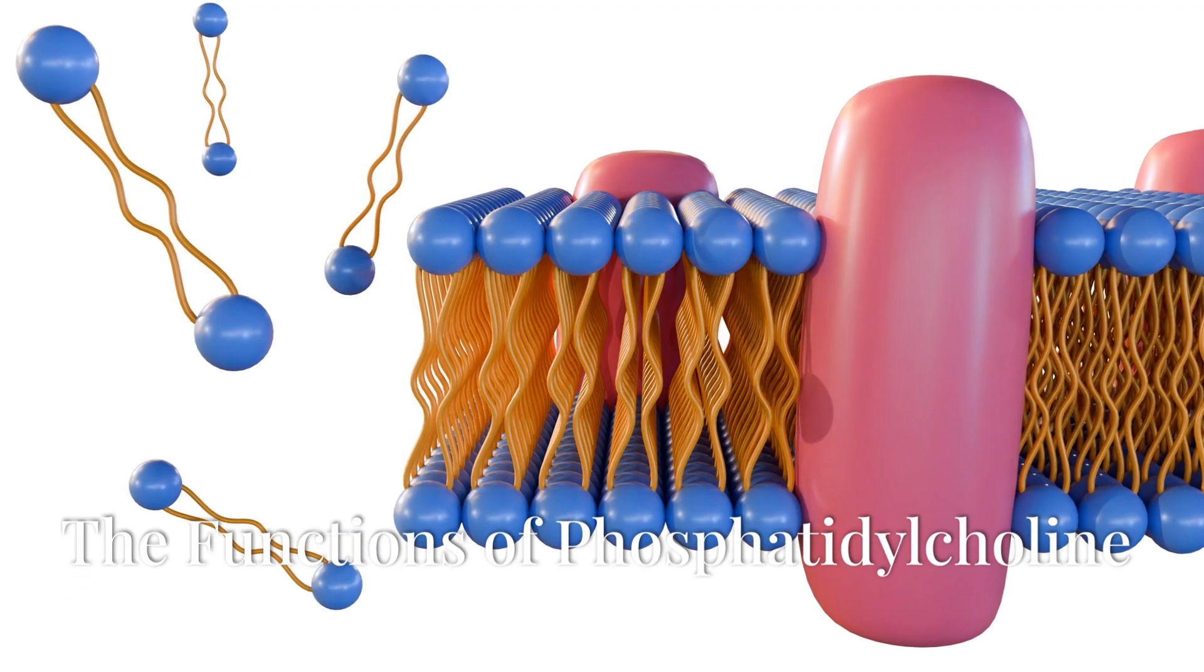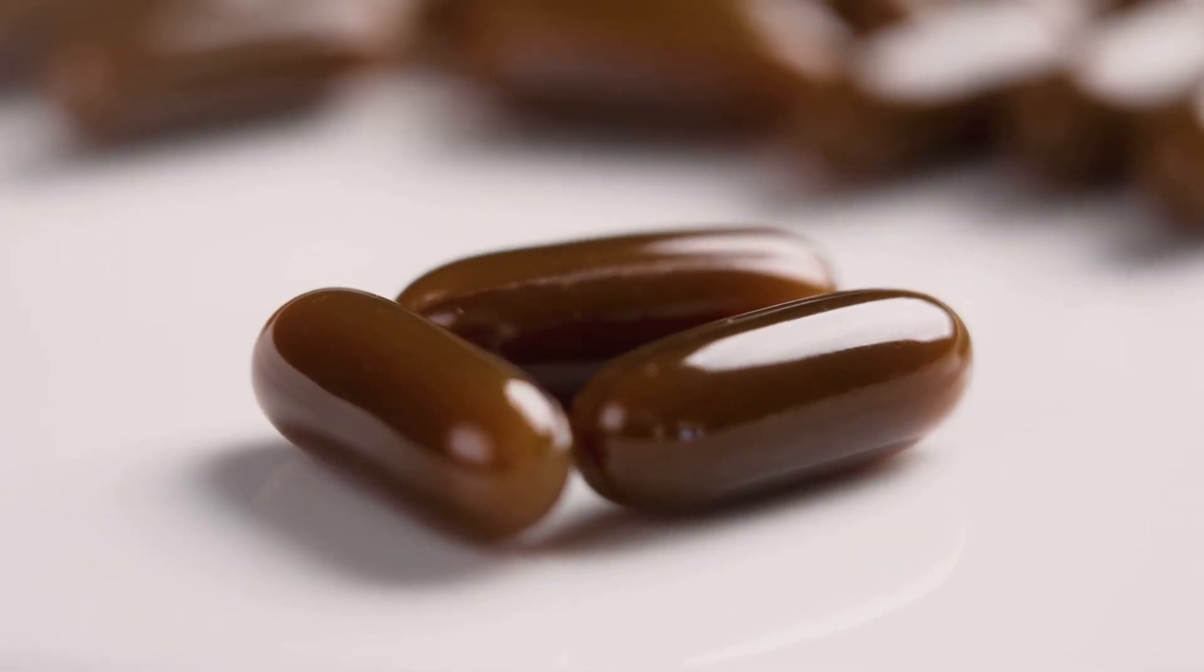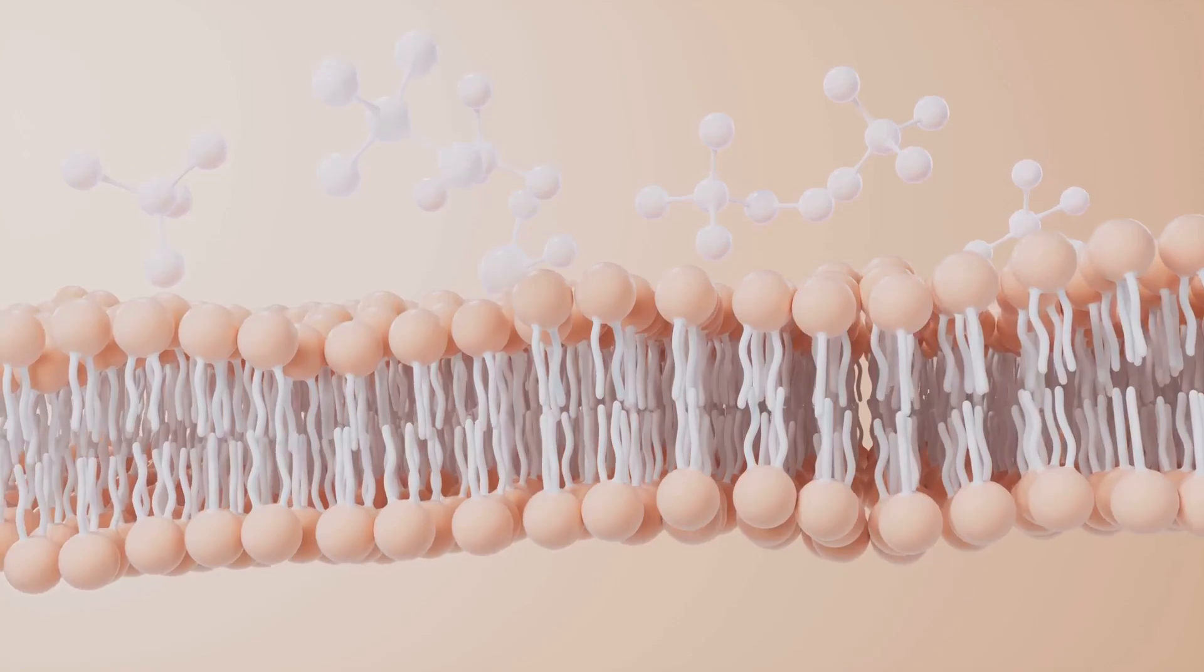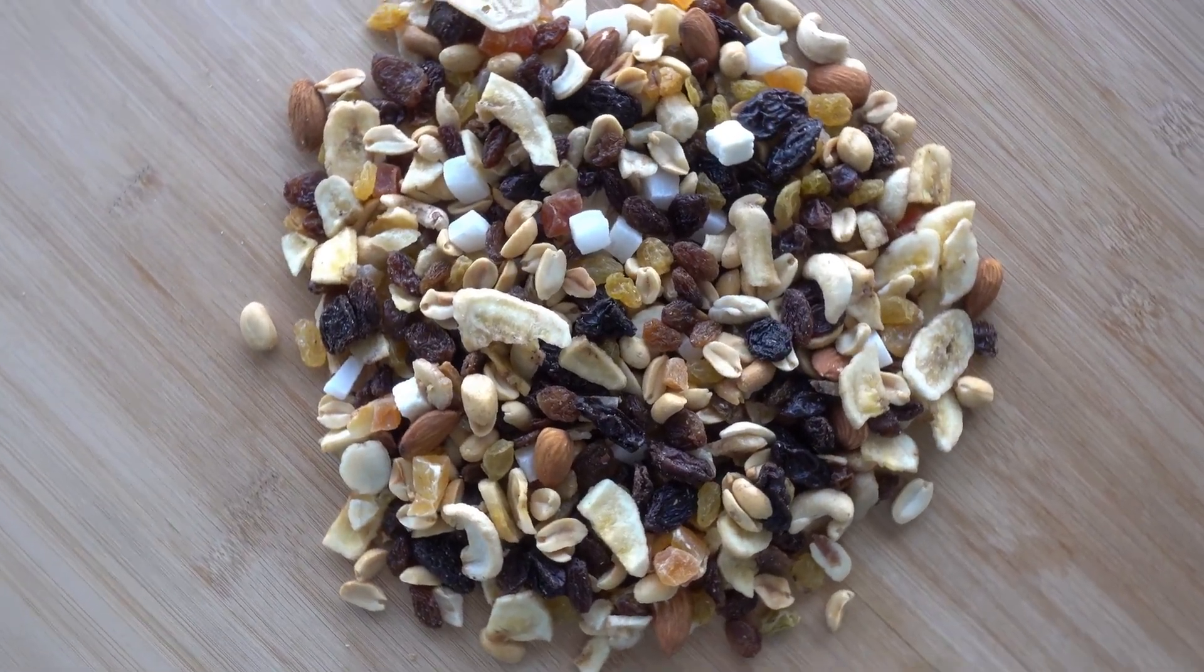The functions of Phosphatidylcholine. Phosphatidylcholine is indispensable for numerous biological functions. It stabilizes cell membranes, supports lipid metabolism, and acts as a precursor for essential signaling molecules like choline.